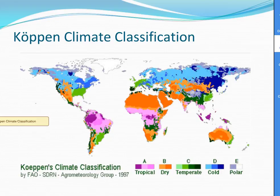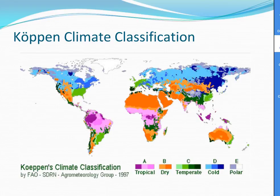Here we see a map that depicts the Köppen climate classification. You can see that he broke it down to tropical, dry, temperate, cold, and polar regions. If the equator ran through this map, you could identify that certain climates are similar even if they are located in regions far apart or in different continents. Latitude determines a lot of the world's climate regions.